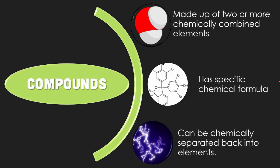Compounds are made up of two or more chemically combined elements — they're not diatomics. Diatomics are bonded from the same kind of element, whereas compounds involve two or more different elements. They have very specific chemical formulas, like water is H2O, and that can never be changed. Since they are chemically combined, the only way to separate them is through chemical separations.